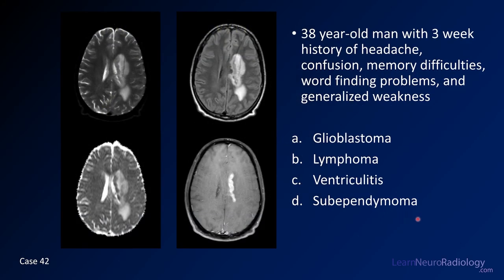Case number 42 is a 38-year-old man with a three-week history of headache, confusion, memory difficulties, and some other generalized neurologic symptoms. We have a T2, a FLAIR, an ADC map, and a post-contrast image. Your choices are glioblastoma, lymphoma, ventriculitis, or subependymoma.